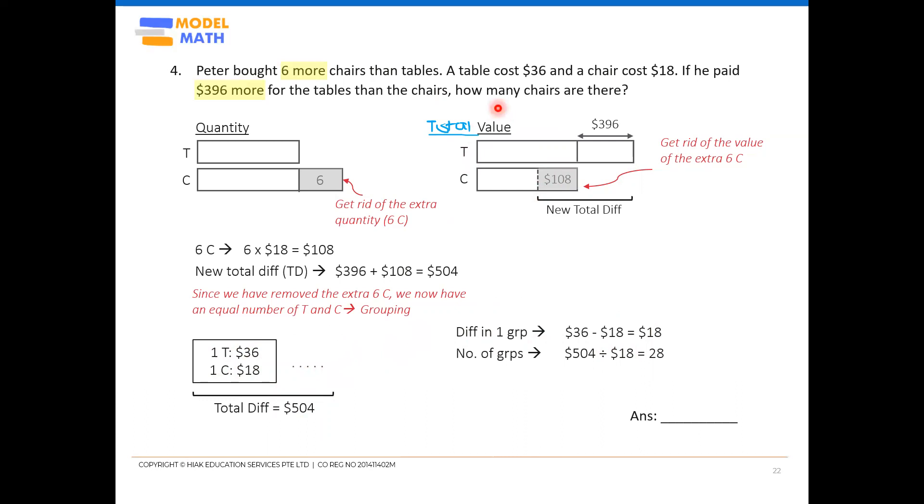Once you get that, always revisit the final question. They want the number of chairs. In one group, how many chairs are there? In one group, I see one chair. Since I have 28 groups, I have 28 chairs, but you have to do the 28 times one. That's how you get a 28, right? Not just the 28 here. 28 is just the groups here. And then always check back the quantity that you get rid of. Remember, just now we got rid of six chairs. You have to add it back here. So if the question asks tables, if they ask how many tables, you stop here. But since they ask for chairs, because of this extra six chairs that just now we removed, we have to bring it back in. That's why you have to add the six. Okay. So 34 chairs is the answer.